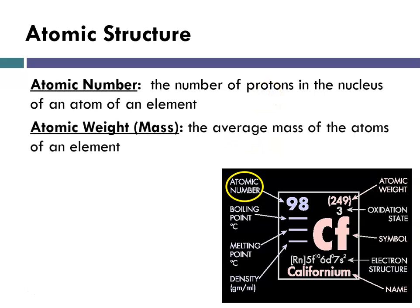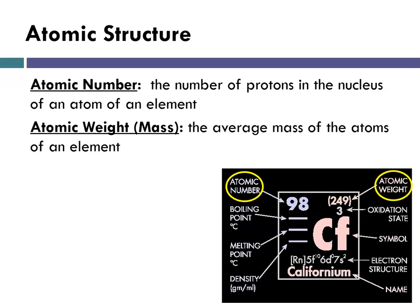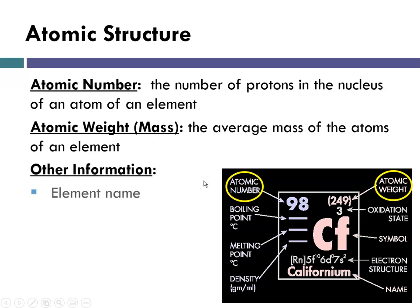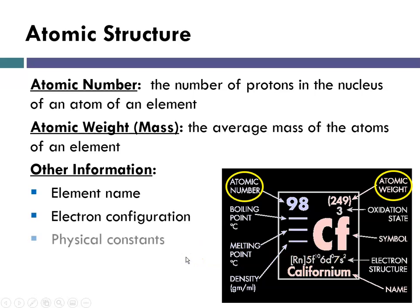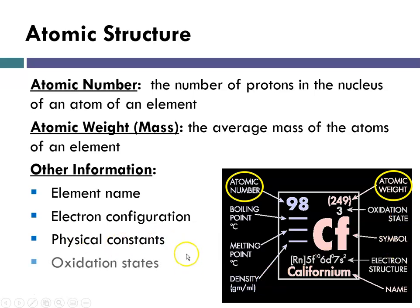You also get the atomic weight or atomic mass, and that's the average mass of the atoms of an element. In this particular periodic table example it's in the upper right. The way you tell them apart is that the atomic weight or atomic mass is usually a number with a whole bunch of decimals after it, whereas the atomic number is just an integer. You also get the element name, the electron configuration, and physical constants — this particular periodic table gives you the boiling point, the melting point, the density, and the oxidation state.